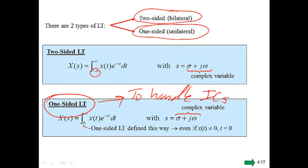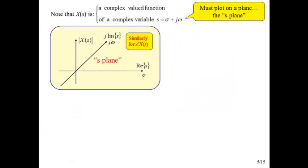The system may have previously been doing something, so it has an output for t less than zero already, and we just need to analyze what happens after, using the Laplace transform with some mechanism to include initial conditions — just like we did with the Z transform. Once we get the Laplace transform of something, X of s, it's a complex-valued function over a complex variable. Unlike the Fourier transform, which we could plot on a single axis, we now have to plot the Laplace transform over a complex plane — the s-plane.